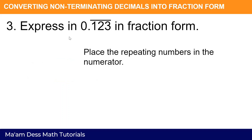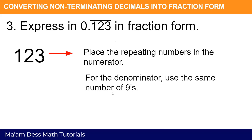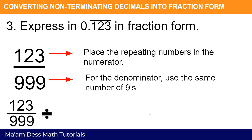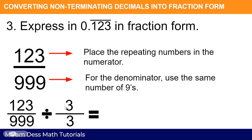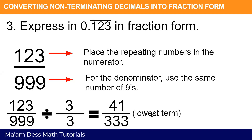Example three: express 0.123 repeating in fraction form. Since we have the vinculum above it, it is a repeating decimal. Place the repeating numbers in the numerator — which is one hundred twenty-three. For the denominator, use the same number of nines: three decimal places, so it becomes nine hundred ninety-nine. Now, kita po natin, pwede pa siyang ma-simplify. Look for the GCF of 123 and 999 — the GCF is three. Divide both by three: 123 divided by 3 is forty-one, and 999 divided by 3 is three hundred thirty-three. The lowest term is forty-one over three hundred thirty-three.